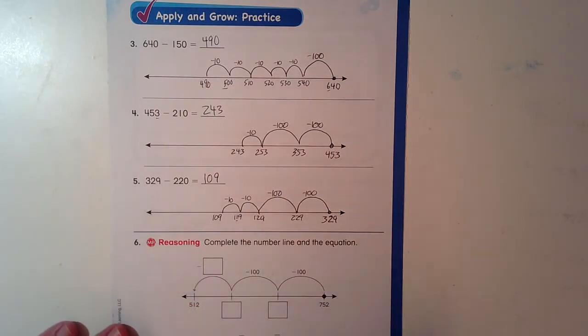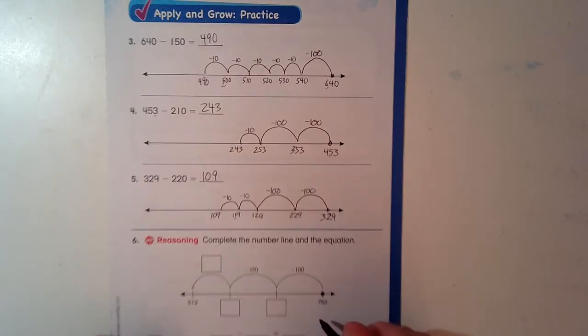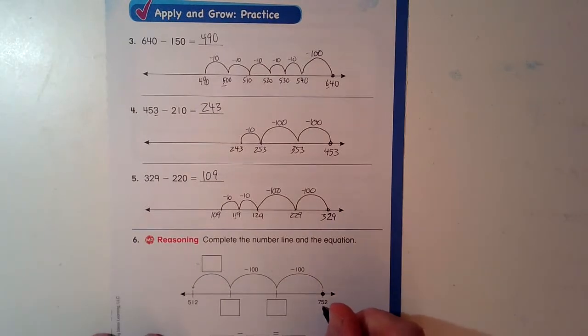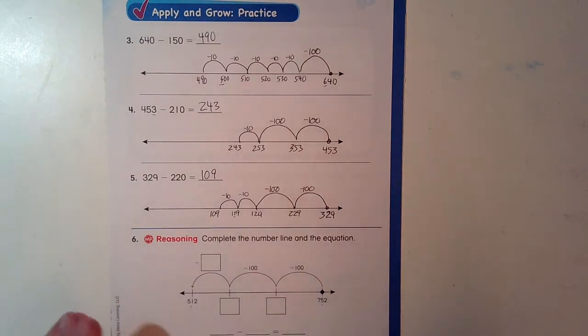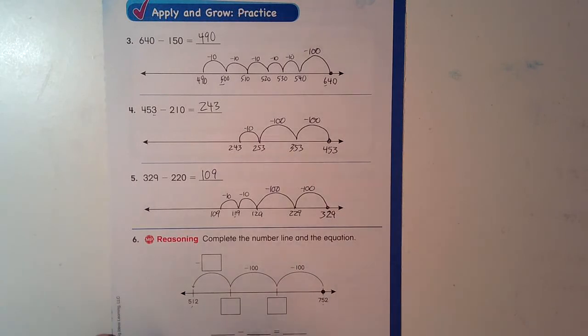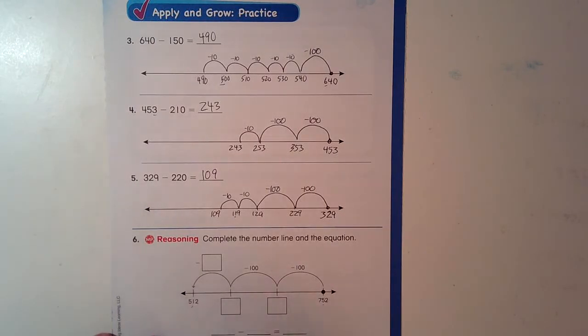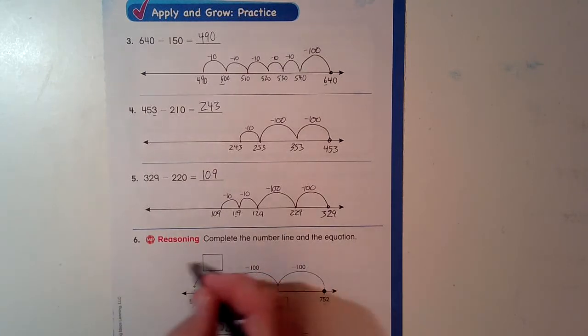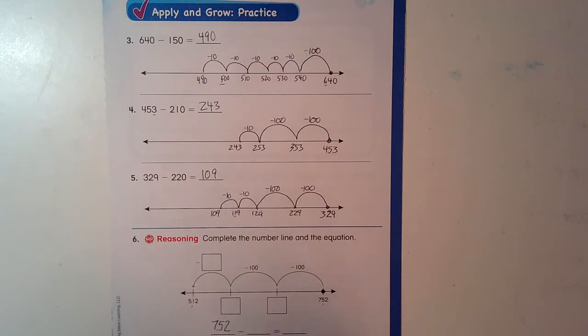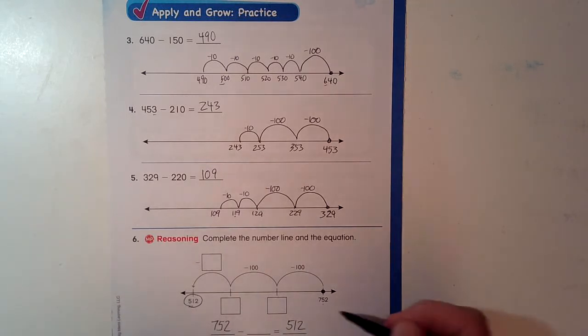Complete the number line and the equation. So, I'm doing this as my beginning. I'm going to end here. I need to figure out what I'm going to do in order to get from here to there. Alright. So I start with 752 and I'm taking away these problems. 752. Where am I going to end up? 512. So I know where I'm going.